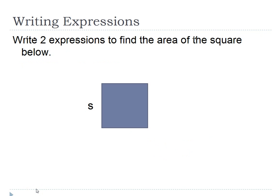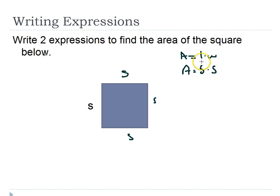Write two expressions to find the area of the square below. Remember area is length times width. When I look at a square, all sides are S. Area equals length times width, so S times S is one expression. Delving deeper, two S's through multiplication means I have an exponent — S to the second power, or S squared. Write that in your notes now.